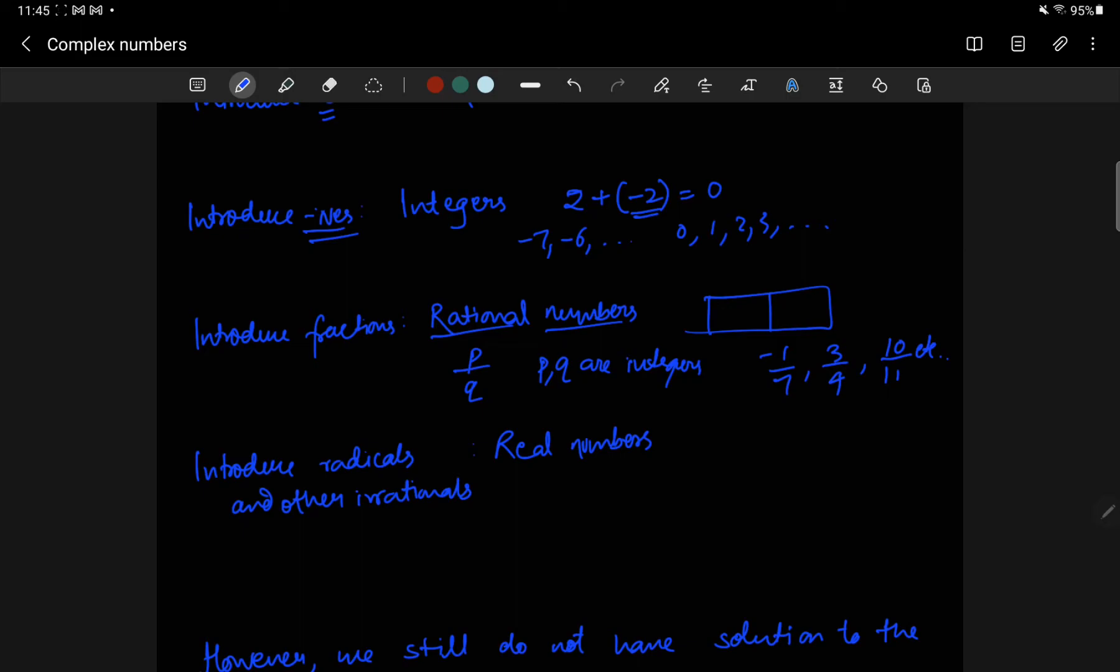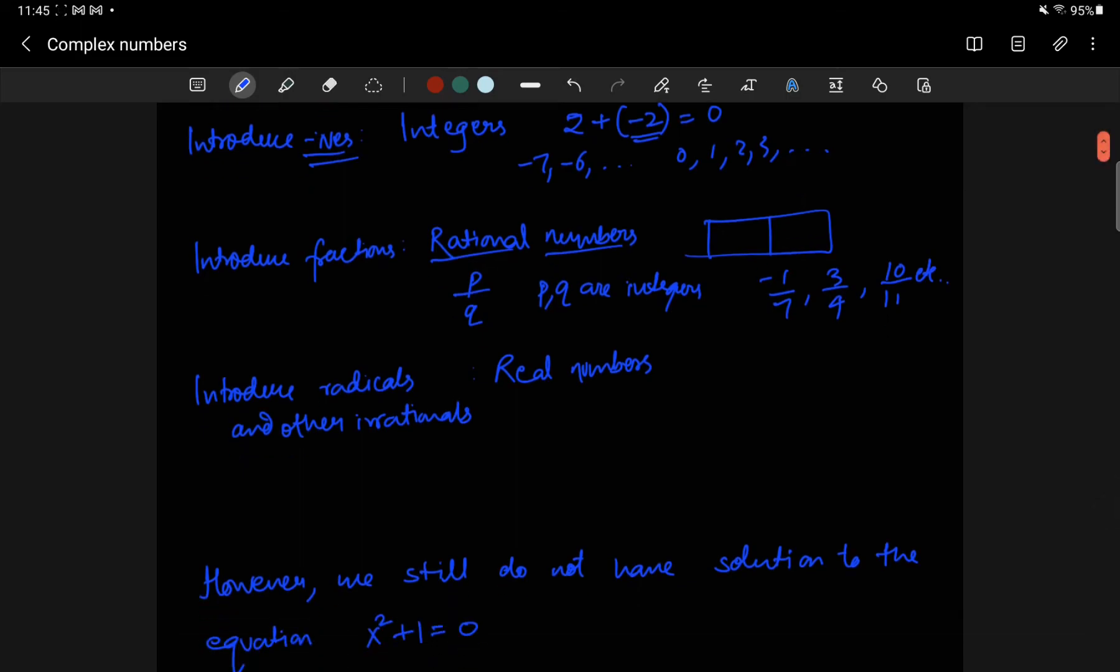Then it was found that these numbers are still not enough to answer many questions. For example, if you draw a right triangle of sides 1 and 1, and you measure this, this comes out to be not a rational number. Meaning this number cannot be written as a ratio of two integers. So this led to the development of these new kind of numbers. So this length is actually root 2. So you add radicals and other irrationals like pi, etc.